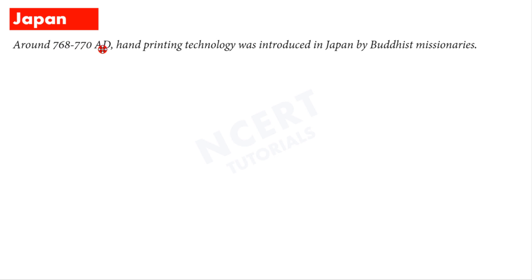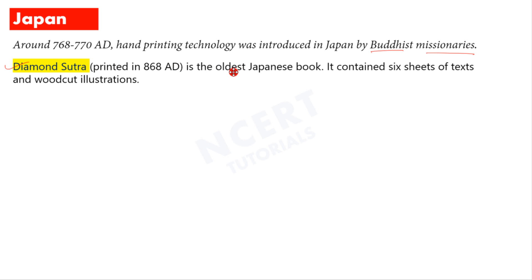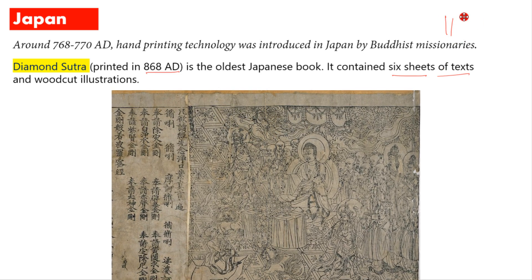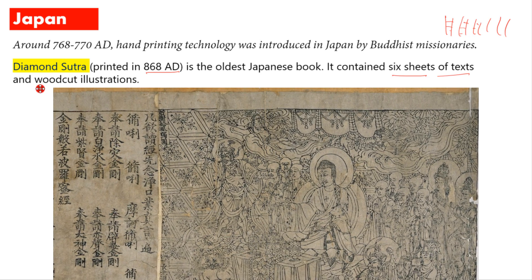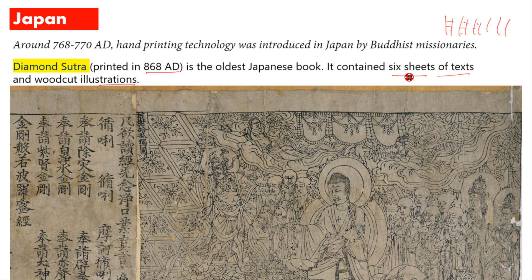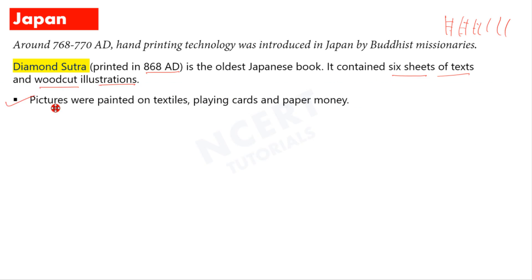Around 768 to 770 AD, hand printing technology was introduced in Japan by Buddhist missionaries. Buddhist missionaries who traveled to spread their religion needed printed matter and books. In Japan, sheets had text printed on them along with very intricate woodcut illustrations — a very complex craft. These books were also printed on textiles, playing cards, and paper money (currency notes).